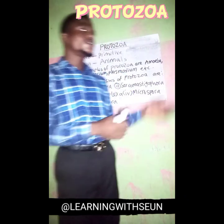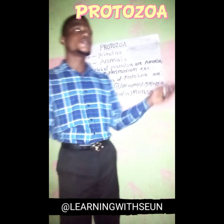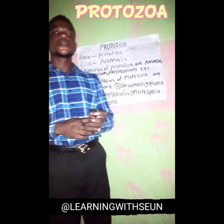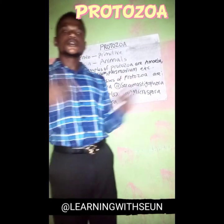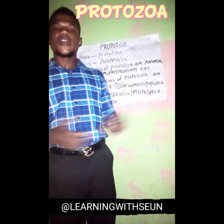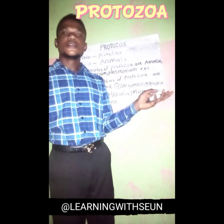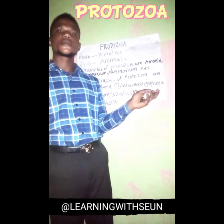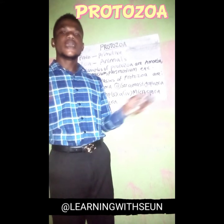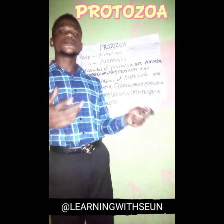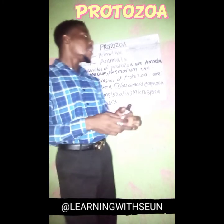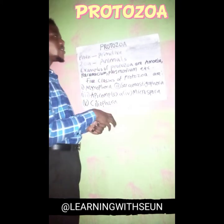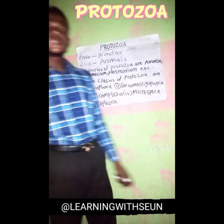When talking about the asexual parts, we have binary fission and other asexual reproduction that takes place in protozoa. These other asexual reproductions are: sporogony, budding, encystment, schizogony, endo-diogeny, endo-polyogeny, and plastogamy. So there are majorly eight asexual reproductions in protozoa.